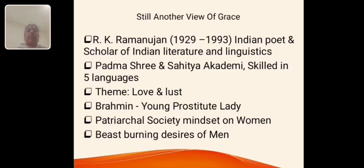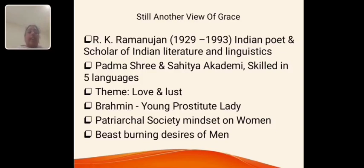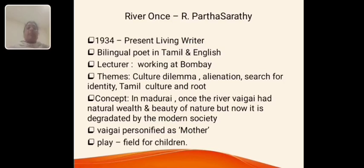The next poem, Still Another View of Grace, is by A.K. Ramanujan. He was born in 1929 and died in 1993. He was an Indian poet and scholar of Indian literature and linguistics. He received the Padma Shri and the Sahitya Academy Award, and is also skilled in nearly more than five languages. In this poem, he discussed the concept of love and lust — how a Brahmin boy has love for a young, beautiful prostitute lady, how men in society are dominating women, and how men look at women as objects of lust.